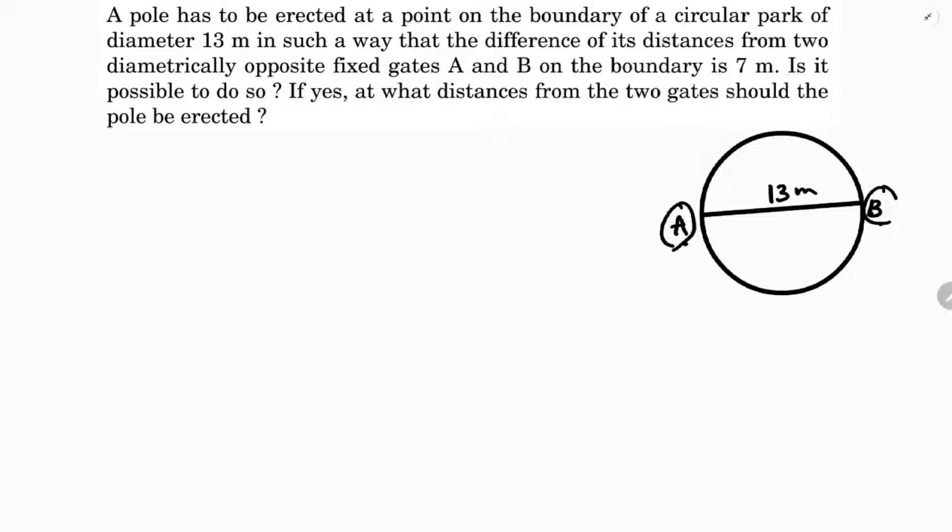We need to keep one more pole. The difference between this side and this side is 7, so I'll consider AP as X plus 7, the other side I'll take it as X.